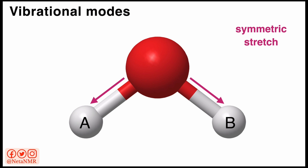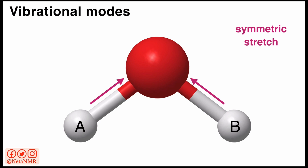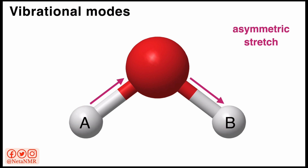This means that the bonds between the oxygen atom and the two hydrogen atoms stretch at the same time, as the arrows indicate. So the bonds become longer and then they become shorter again. The second type of vibration is the asymmetric stretch. In this case, as the arrows indicate, while one bond becomes longer, the other one becomes shorter.